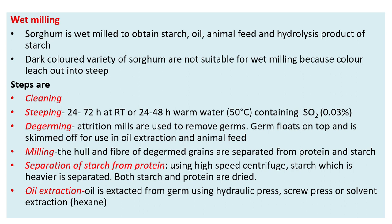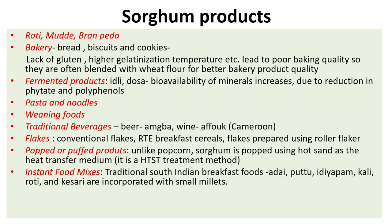After steeping: de-germing, milling, separation of starch from protein, and oil extraction — oil is extracted from the germ using hydraulic press, screw press, or solvent extraction using hexane. Sorghum products include roti, mudde, brown peda, bakery bread, biscuits, and cookies. However, lack of gluten and higher gelatinization temperature lead to poor baking quality, so sorghum is often blended with wheat flour. Fermented products include idli and dosa; bioavailability of minerals increases due to reduction in phytate and polyphenols. Also traditional beverages such as beer, Emba wine, and Afouk wine in Cameroon are made using sorghum.